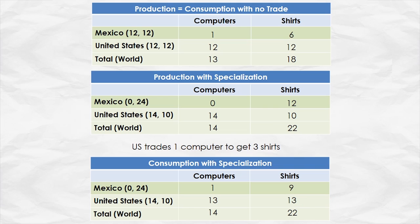Pretty remarkable. Trade according to comparative advantage has made both countries better off. One thing to keep in mind is that absolute advantage, although it doesn't explain trade, does explain how wealthy countries are. Even with trade, Mexico is still considerably less wealthy than the United States — total production in Mexico is one computer and nine shirts, compared to the United States with 13 computers and 13 shirts. So absolute advantage explains which countries in the world are rich.